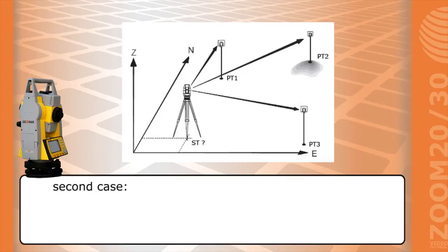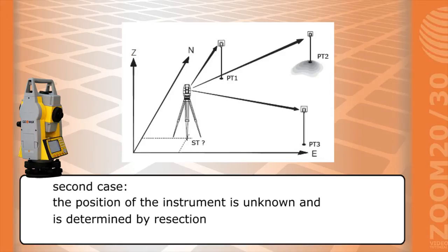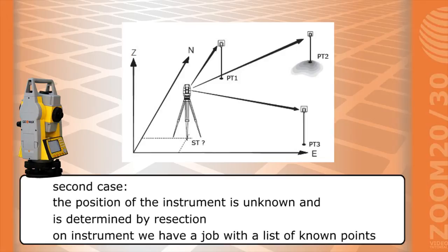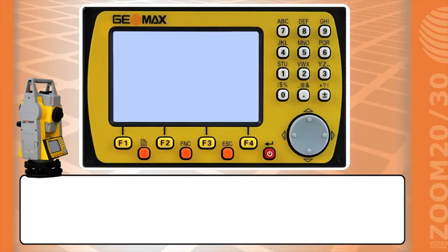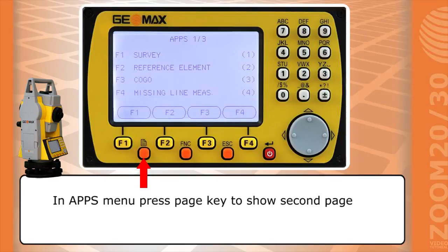Second case. The position of the instrument is unknown and is determined by resection. On instrument we have a job with a list of known points. In apps menu press page key to show second page.